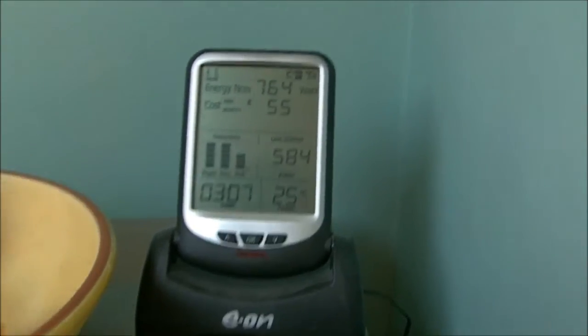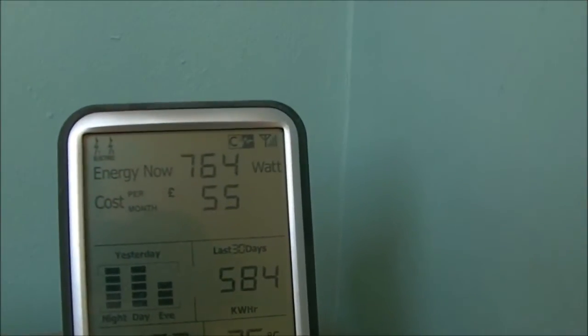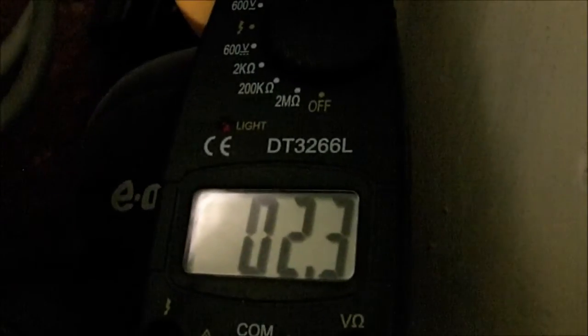Right, now on the kilowatt meter we're running 764 watts, the whole house. Not a lot is on at the moment. And I'll just put the clamp meter up in the fuse board. Put that light on. And we've got 2.3 amps. What I'll do is I'll just run through the house and turn some things on.